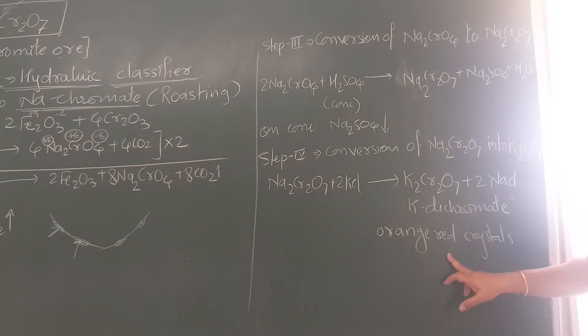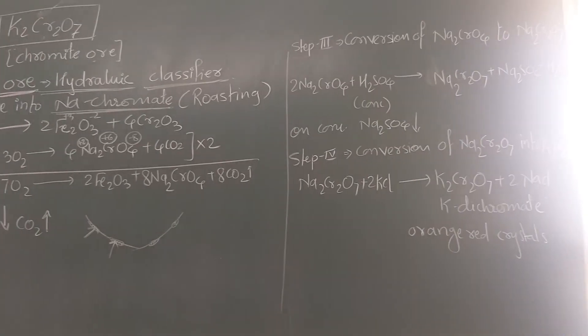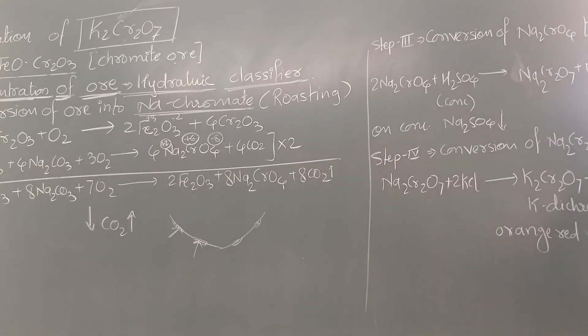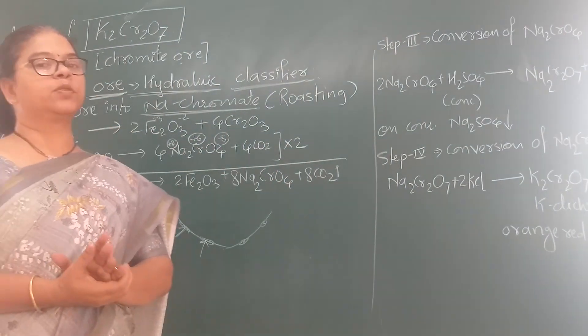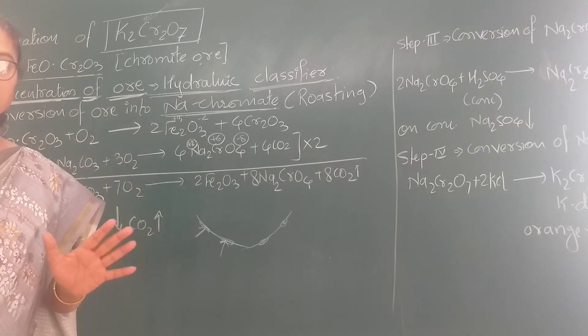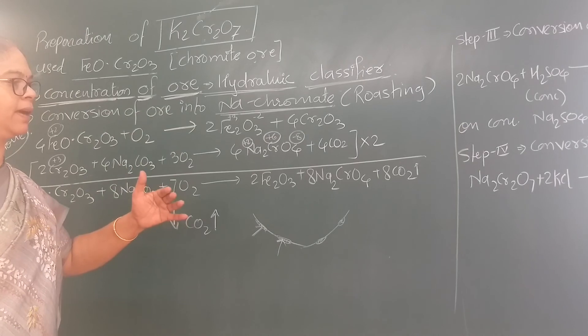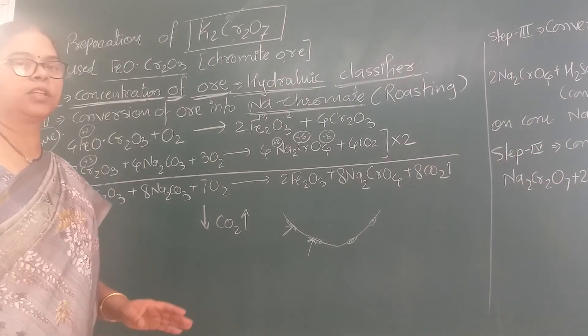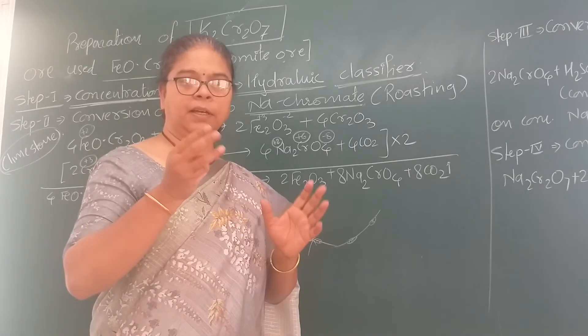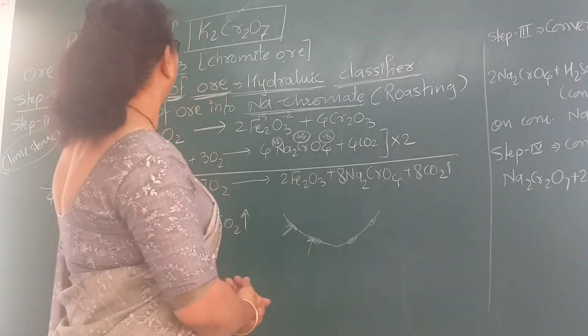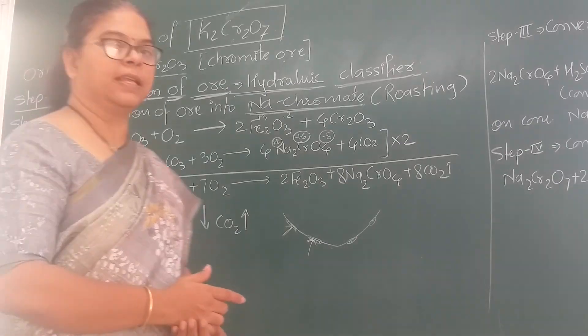So this is the preparation of potassium dichromate. In the next part, we will practice balancing the chemical equations for these reactions involving oxidation state, electron exchange, and color changes.